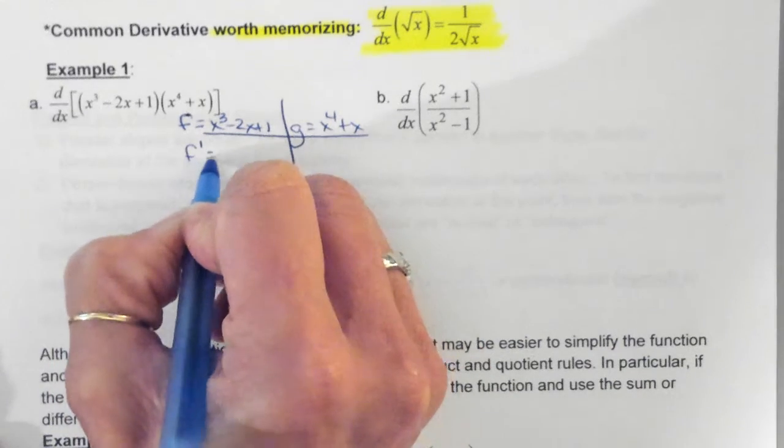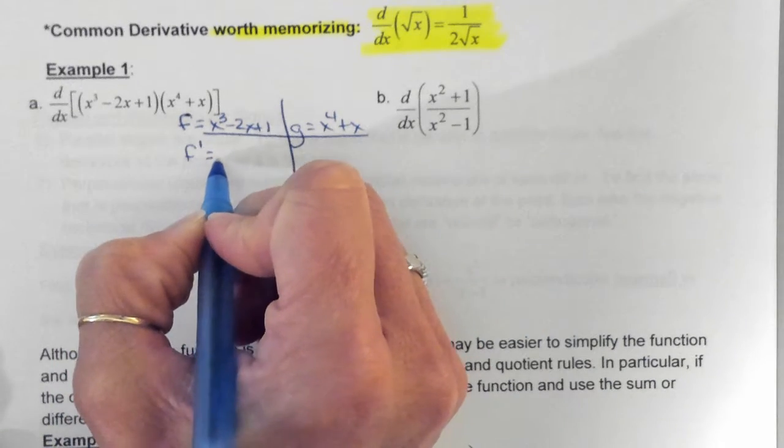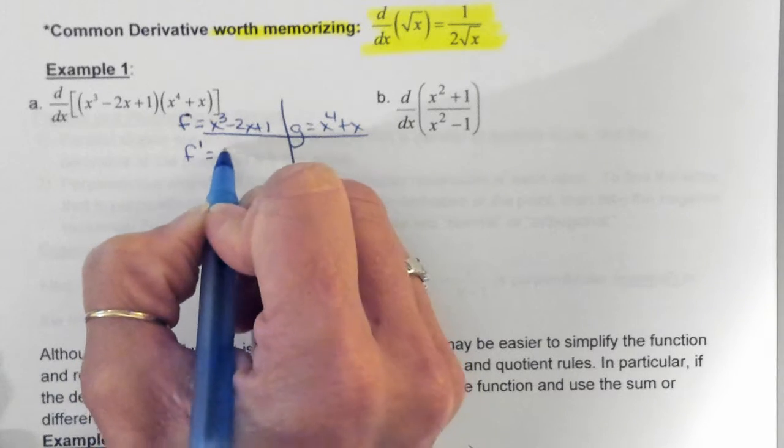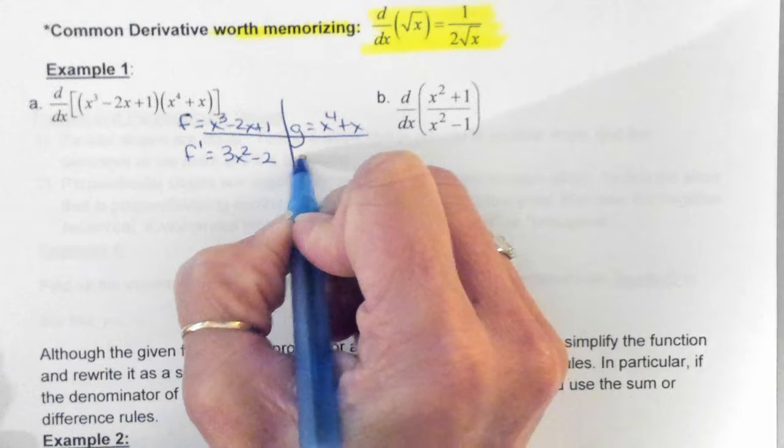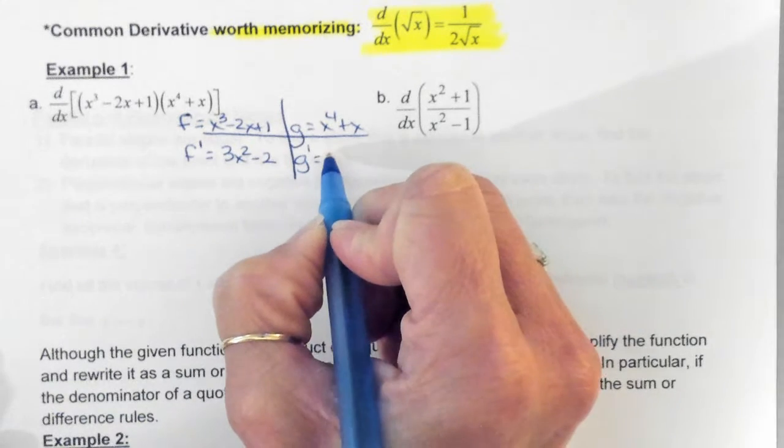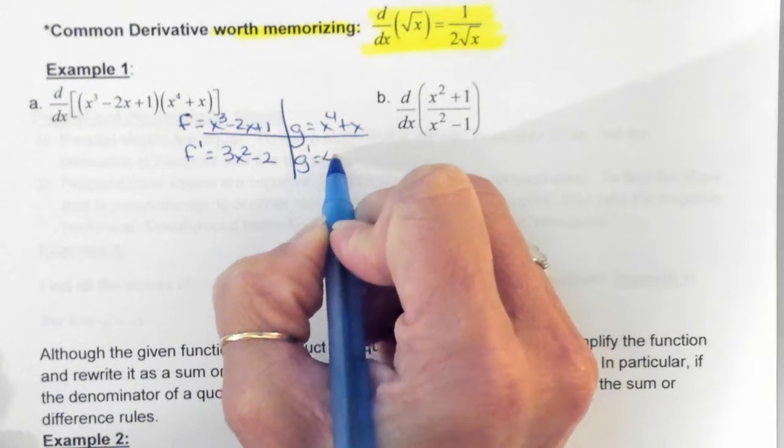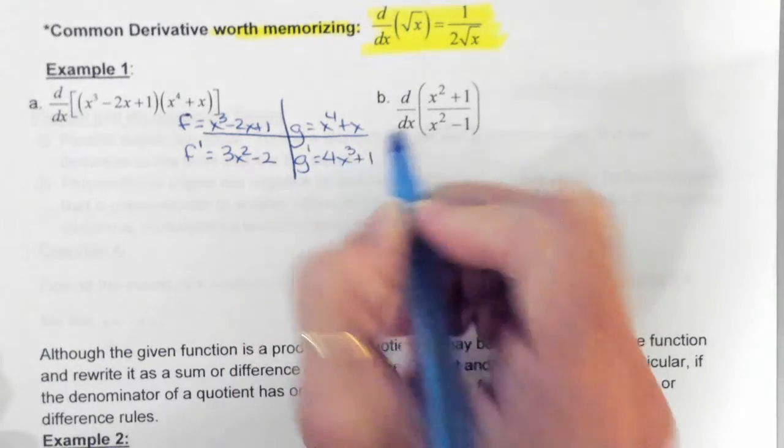So typically your first is going to be your F. So I'm going to say, alright, I want F to be equal to X cubed minus 2X plus 1 and my G is X to the fourth plus X. So now underneath, we're going to take the derivative. So what's the derivative of F? That's right, 3X squared minus 2. And what about G? What's the derivative? 4X cubed plus 1.